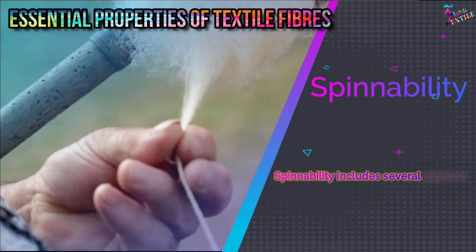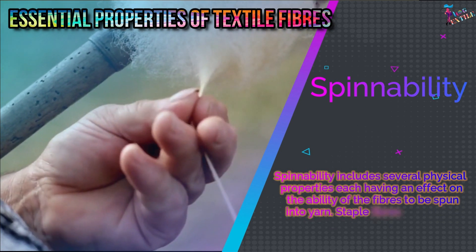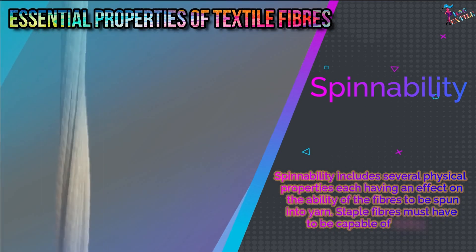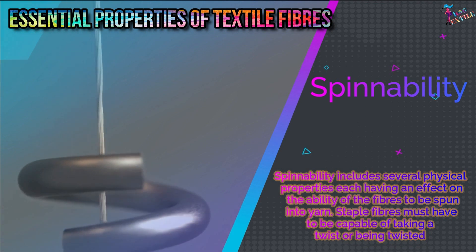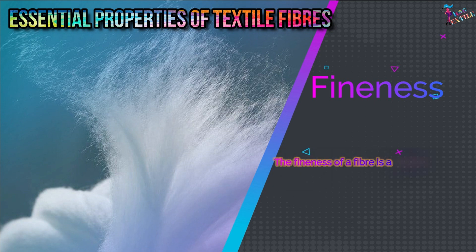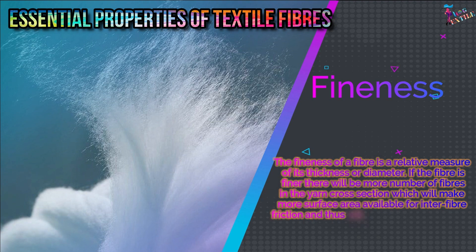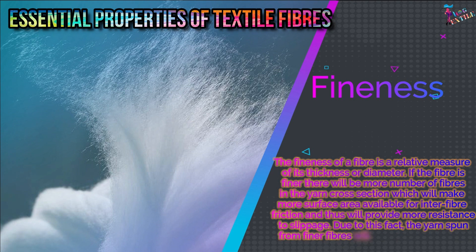Spinability includes several physical properties each having an effect on the ability of the fibers to be spun into yarn. Staple fibers must be capable of taking twist or being twisted. Fineness is a relative measure of a fiber's thickness or diameter. If the fiber is finer, there will be more fibers in the yarn cross-section, providing more surface area for inter-fiber friction and thus more resistance to slippage, so yarn spun from finer fibers will have higher strength.